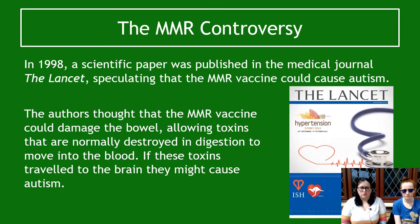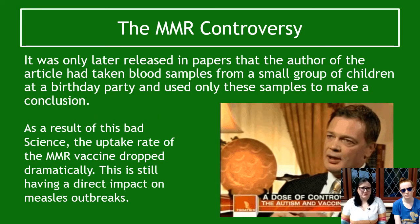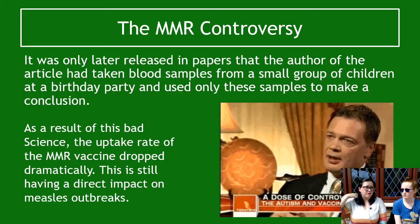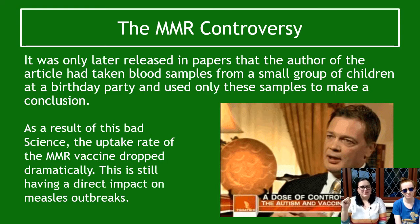It was only later revealed that the author had used a tiny sample size — a small group of children at a birthday party primarily made up of autistic children. That's essentially like saying you want to find out if there's a link between spoons causing peanut allergy, going to a convention full of peanut allergy sufferers, watching them eat cake with a spoon, and concluding you've made science. That's bad science.